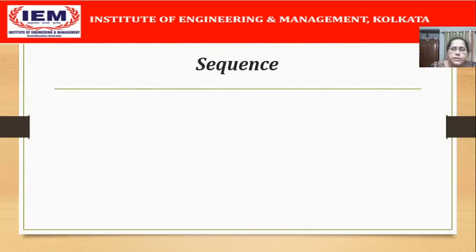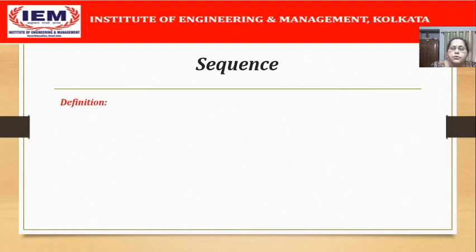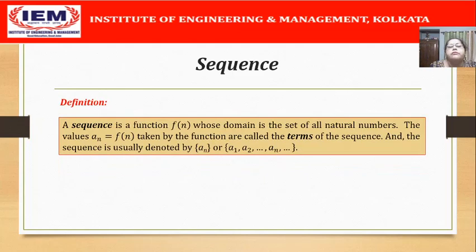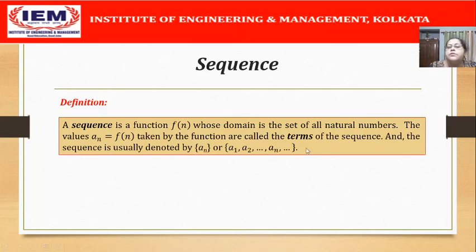So, what is a sequence? From a layman's point of view, a sequence is just a list of numbers written in a specific order. Let us see once the mathematical definition also. A sequence can be defined as a function f(n) whose domain is the set of all natural numbers. That means for every natural number n, we get a value of the function f(n), and this is what is actually termed as the members or the terms of the sequence, written as f(n) or very often as a_n.